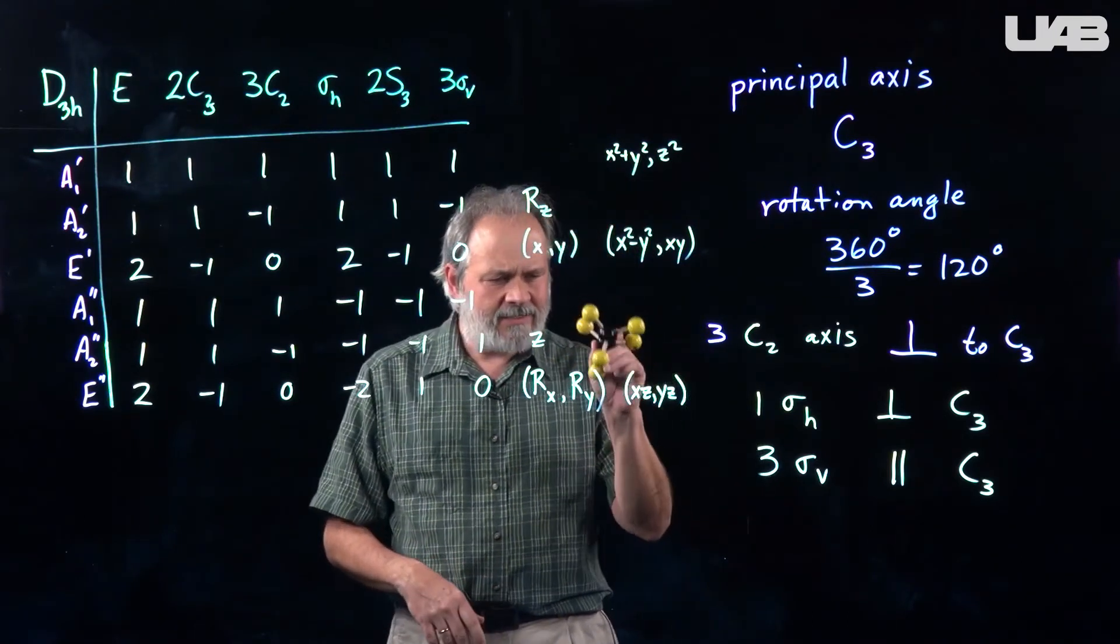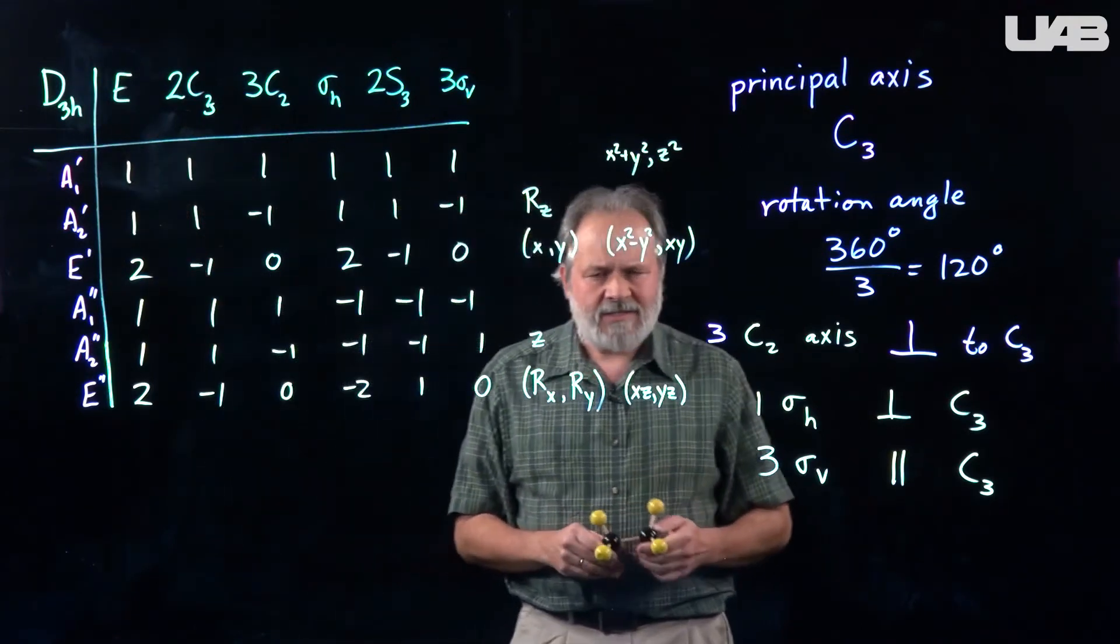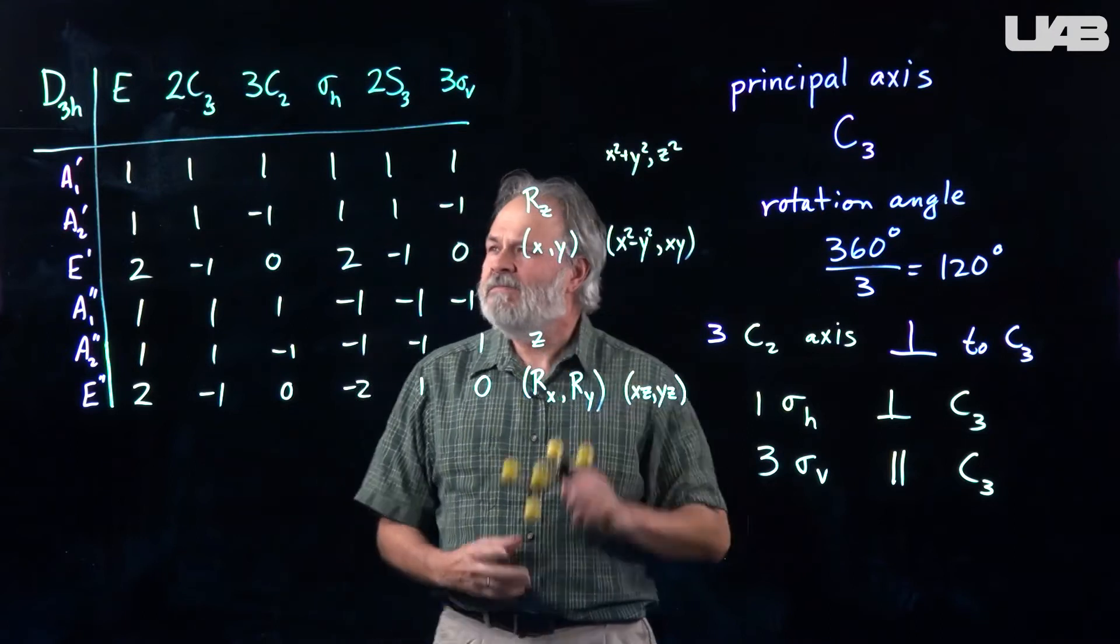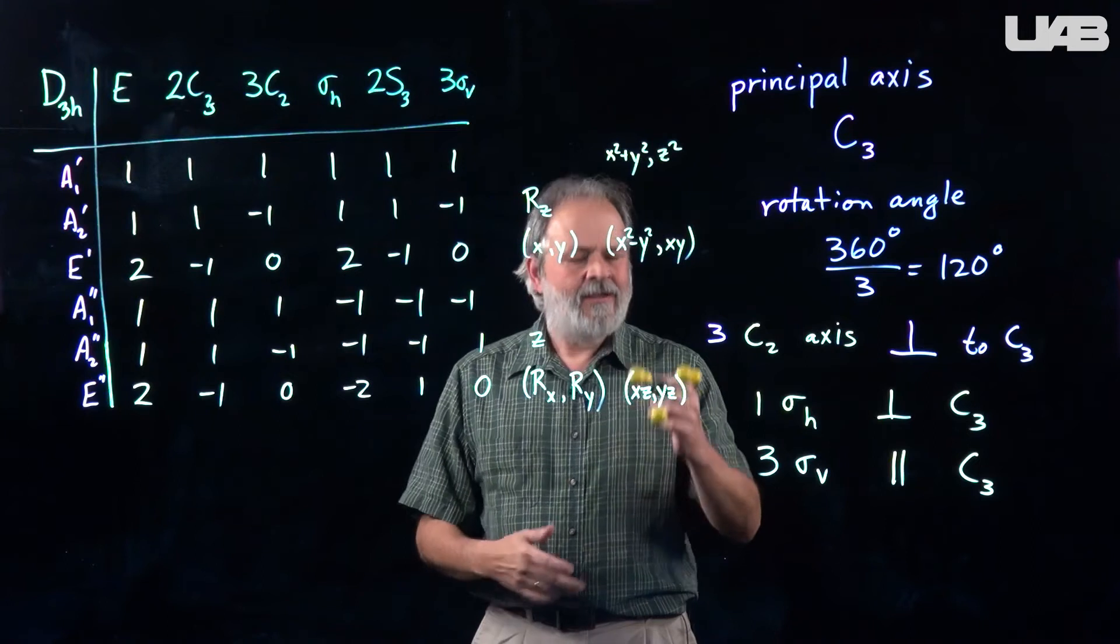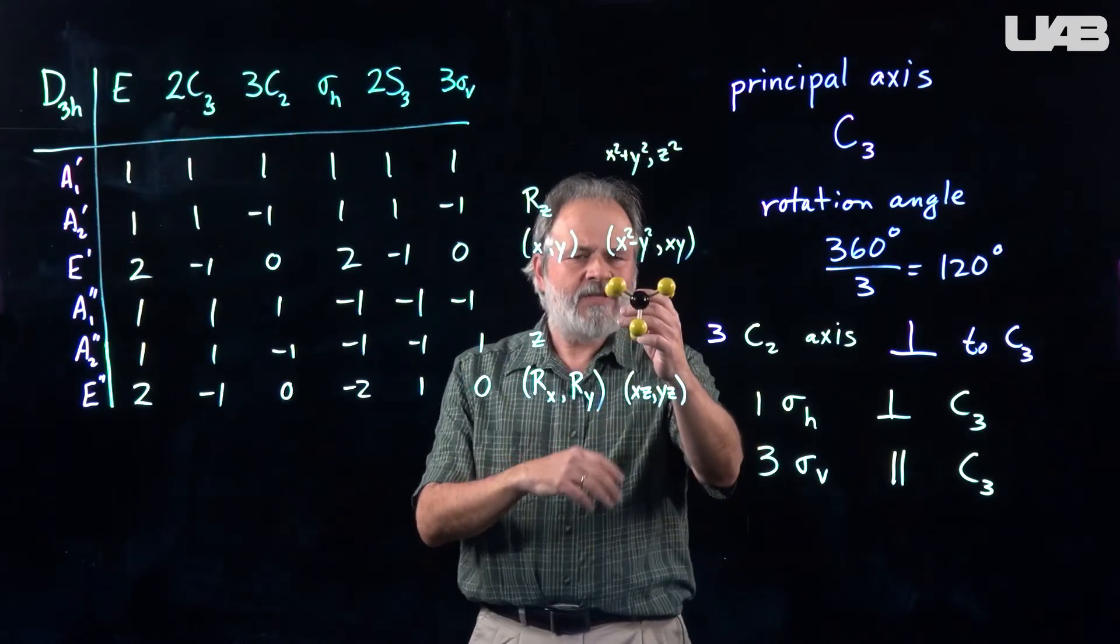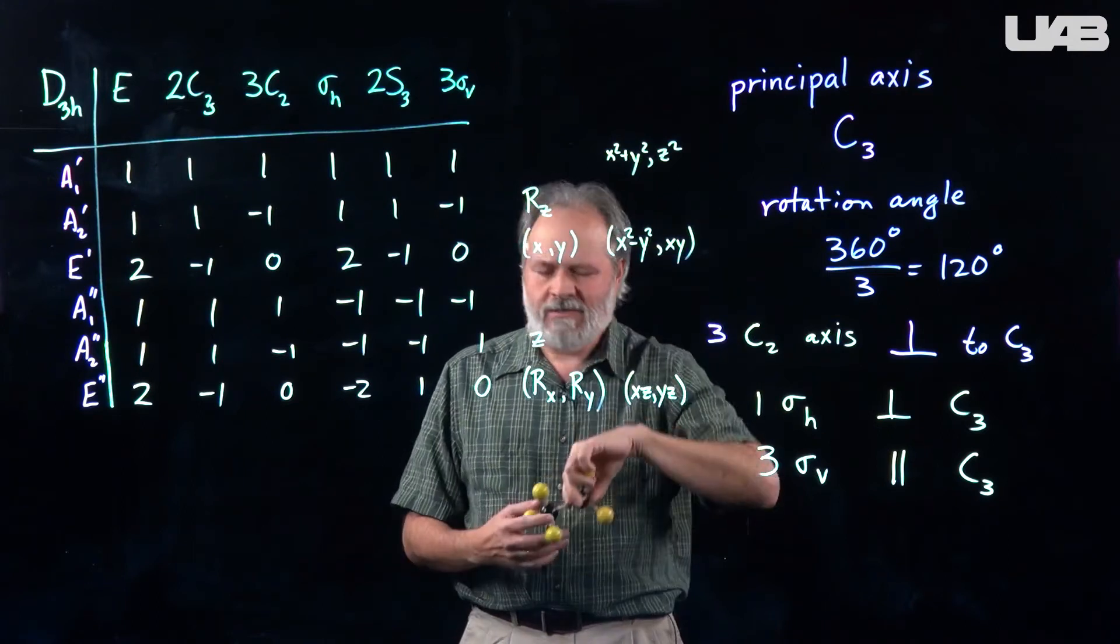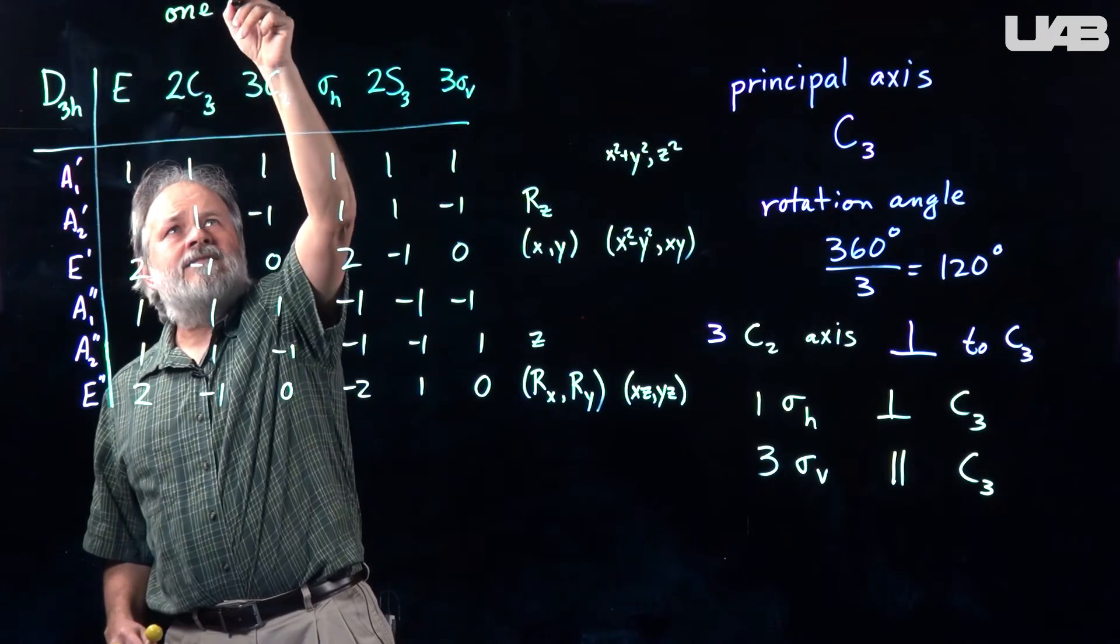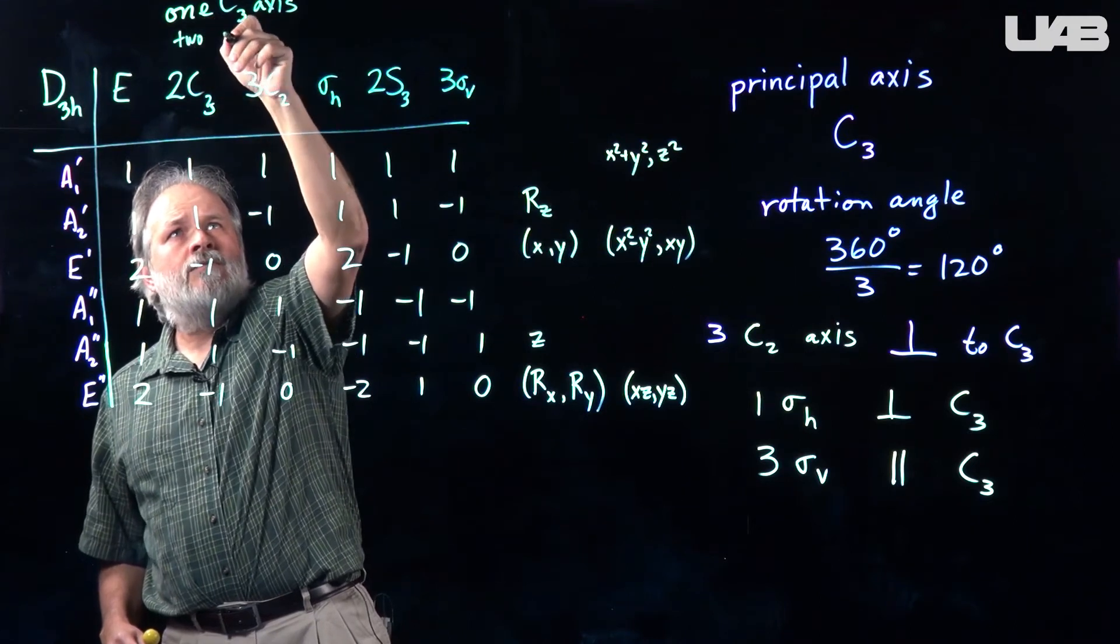So E refers to a necessary element in order to have group multiplication by one. It's called the identity. That means don't do anything. So there's always this in the character table because there's always the operation don't do anything. Then there's a column that says 2C3. That's the rotations by 120 degrees and 240 degrees. So there is one axis. There's two rotations.